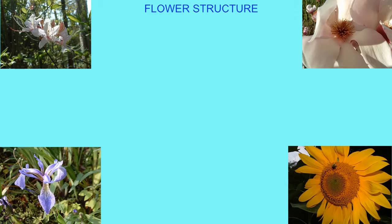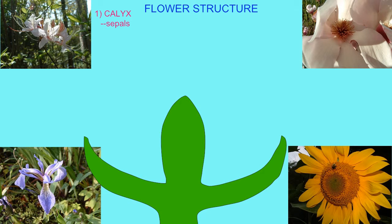Flowers are composed of four whorls of structures, some of which are modified leaves. The outermost whorl is known as the calyx and is composed of modified leaves known as sepals. In most flowers these are green and may offer protection to the flower while it is in the bud stage.